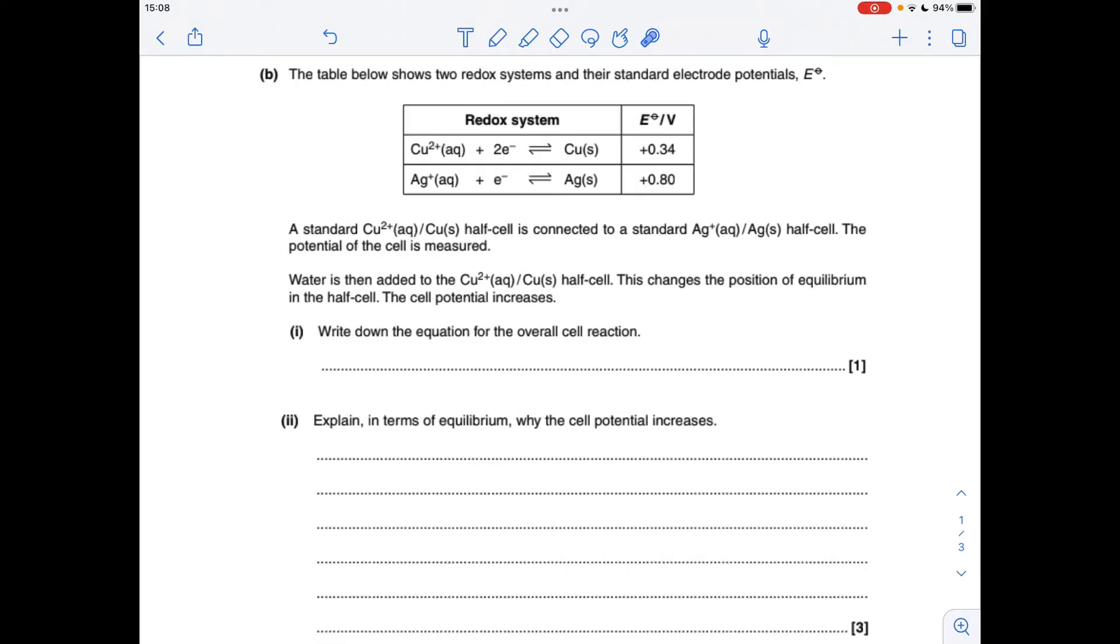Moving on to part B, we need to look at the standard electrode potential values. This one's the most positive one, so this half equation is going to run left to right. This one's going to run right to left. All we need to do is multiply this silver equation by 2 so that the electrons will cancel. So the overall equation for the cell is this one here.